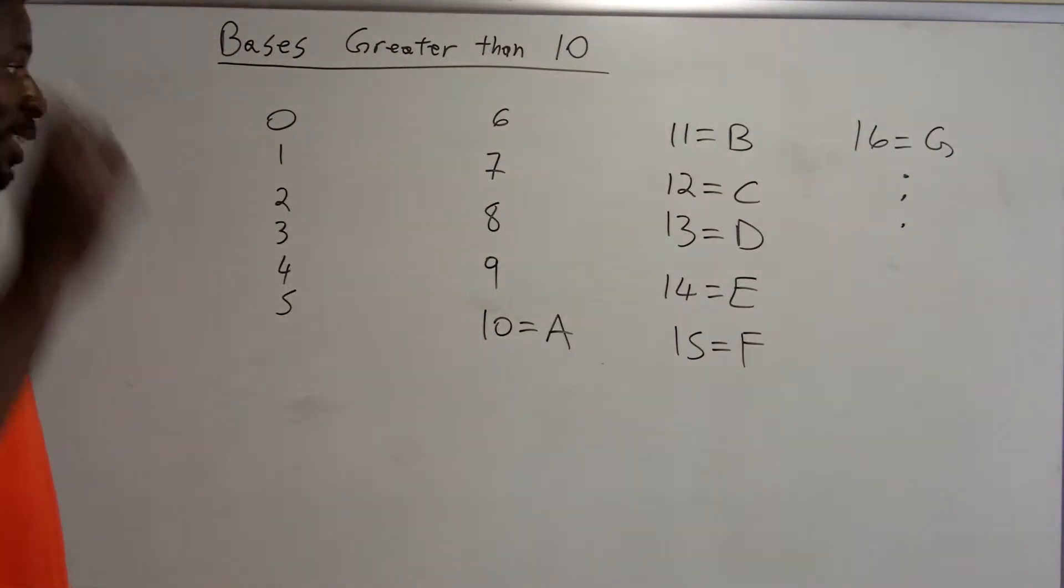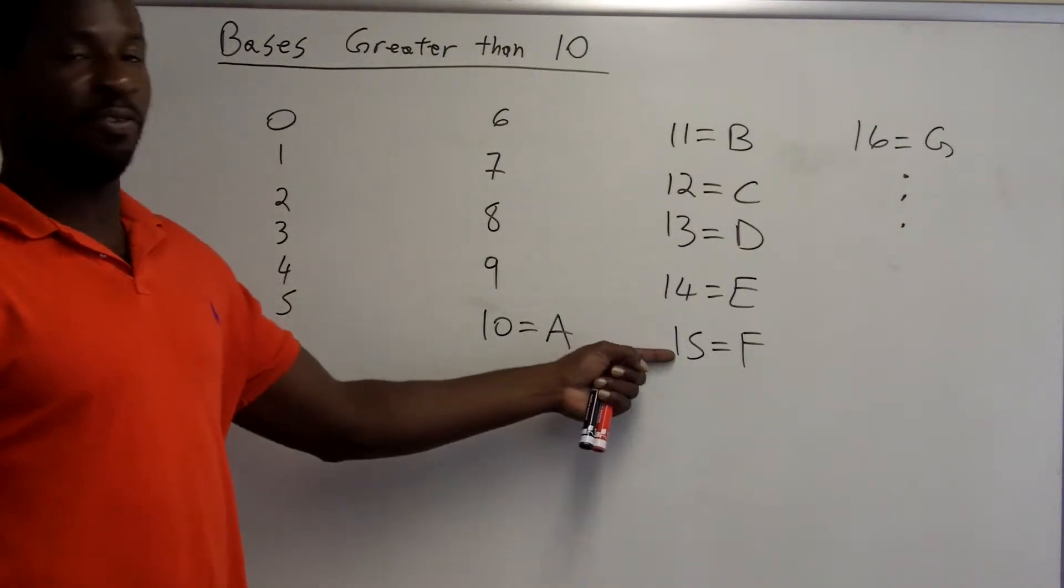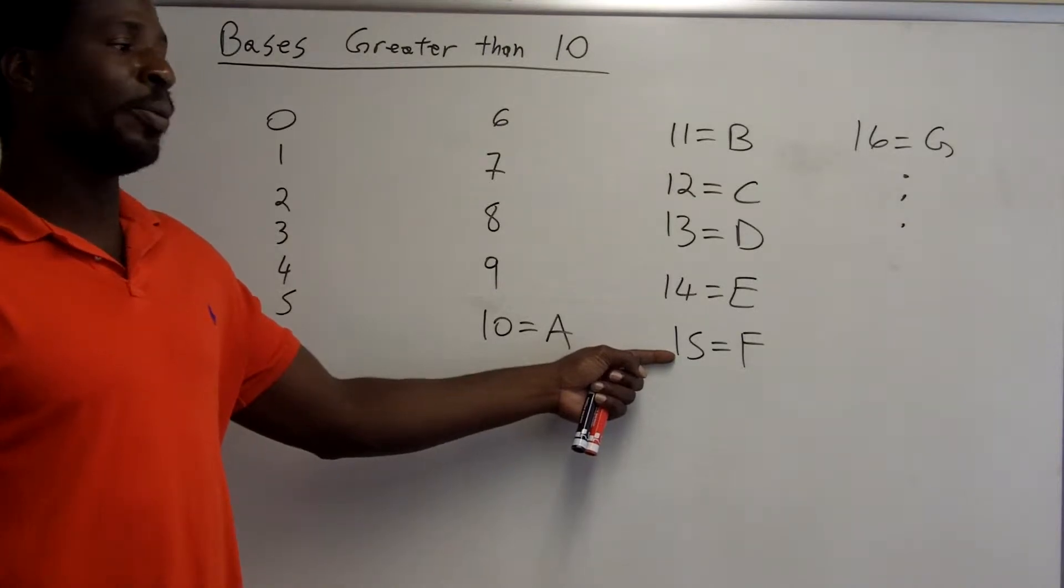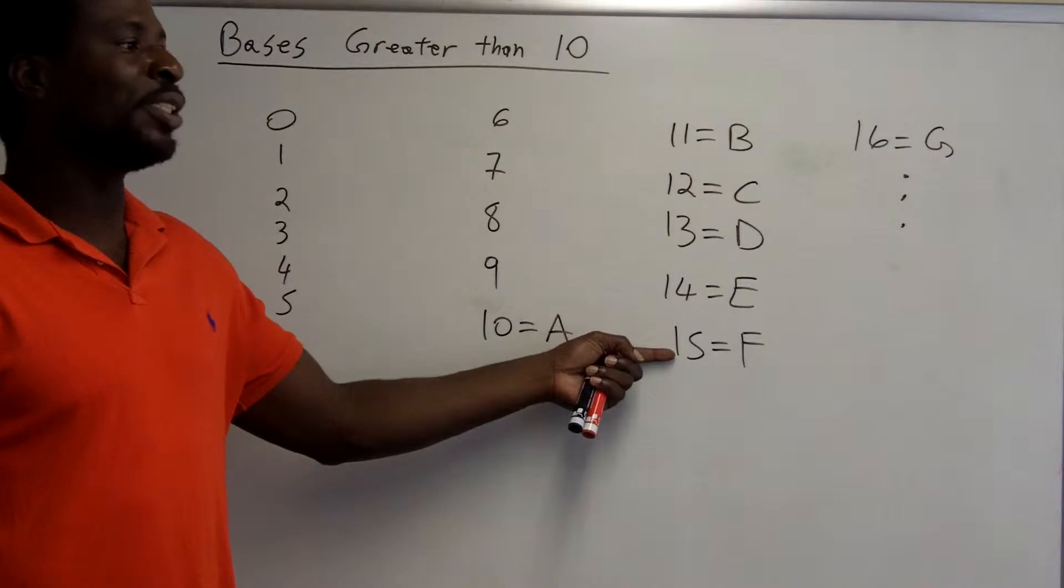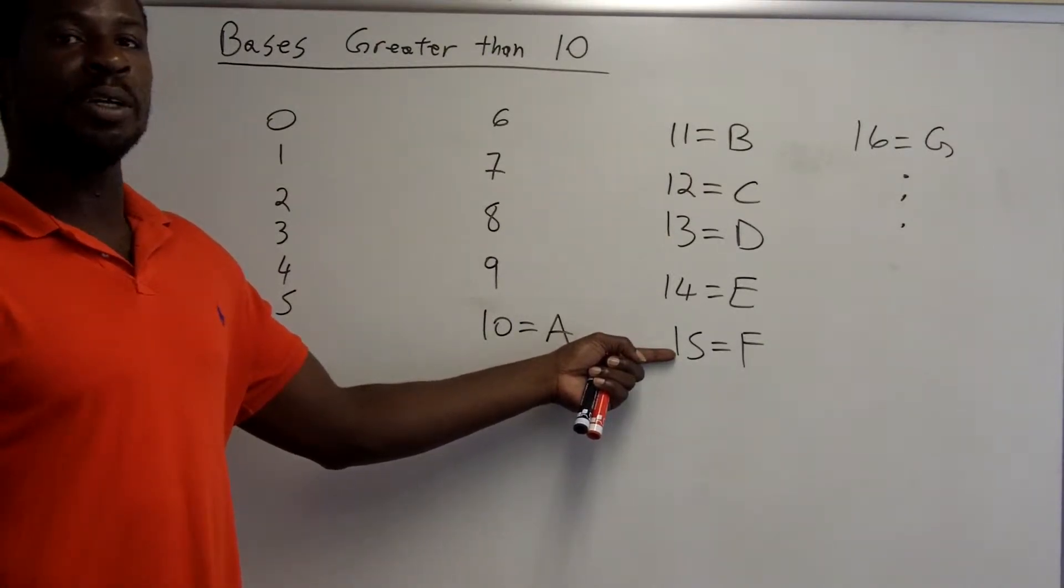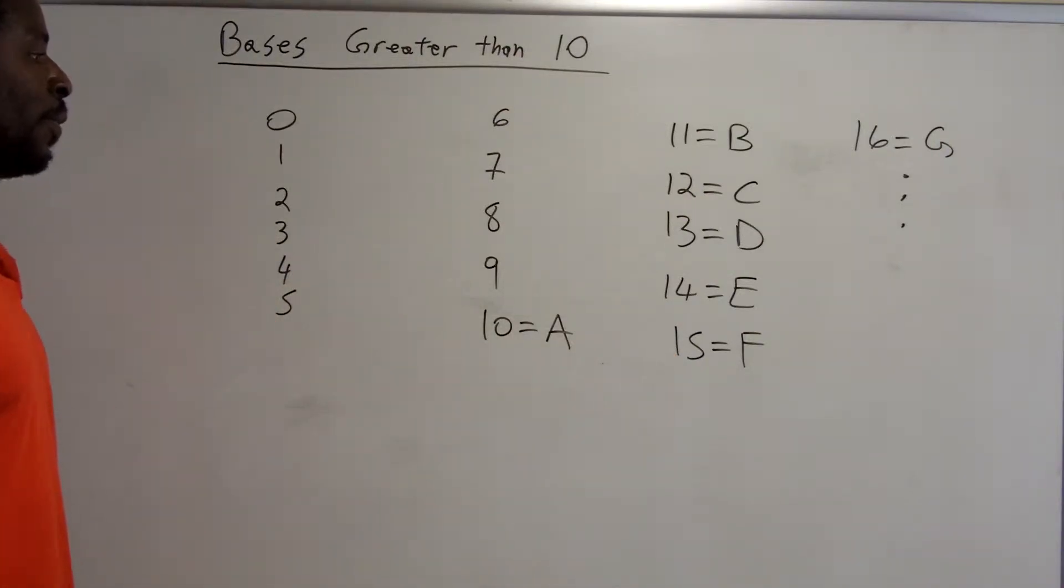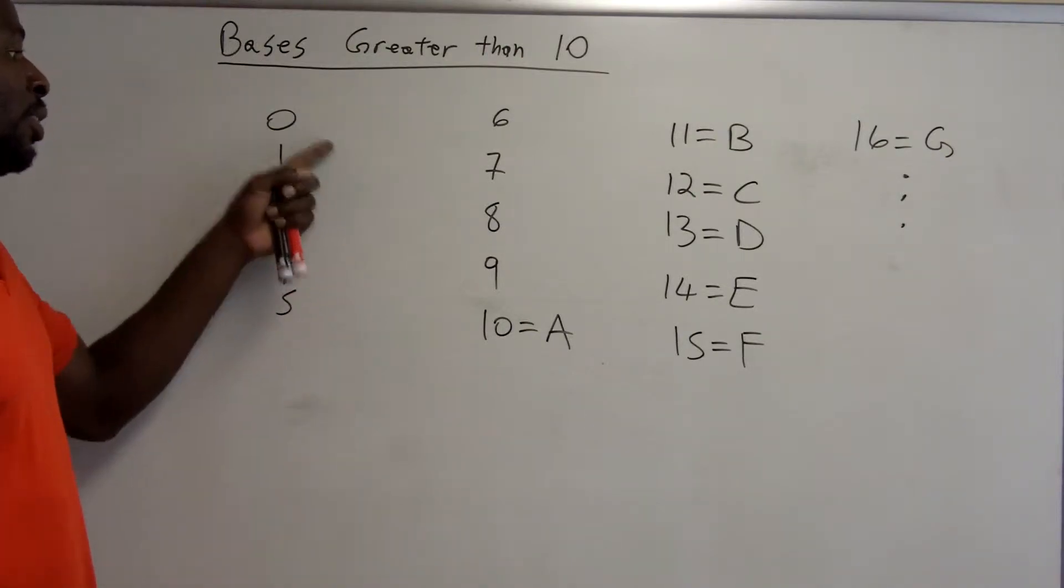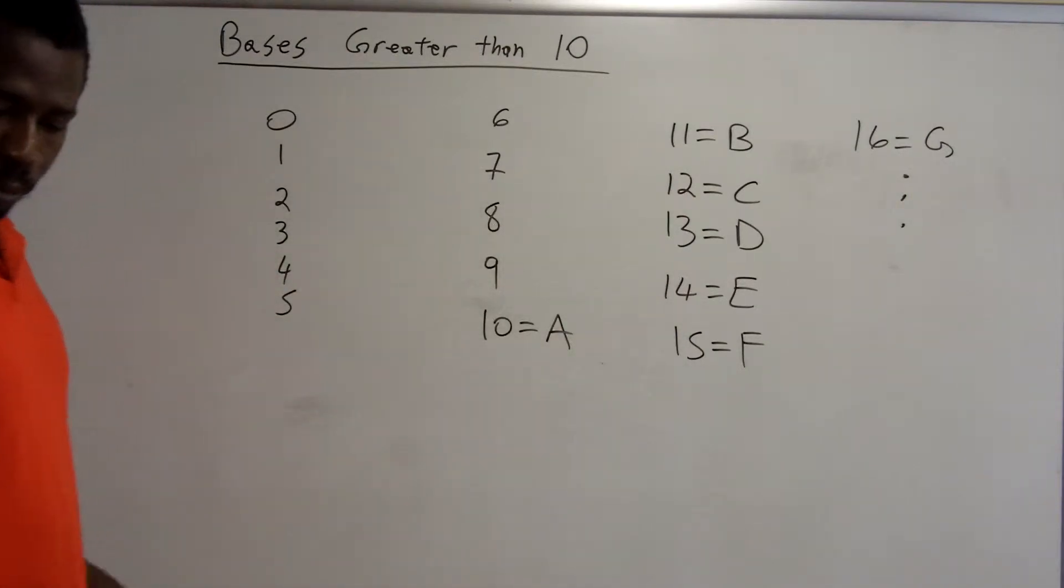So if you have a base 16 system, you'll be using the numbers 0 to 9 and the letters A through F to represent your numbers. Those will be the numerals to represent all of your numbers. A base 16 system is actually called a hexadecimal system. A base 2 system is called a binary system. Both of those are systems that your computer would use. Binary systems only use 0s and 1s. Hexadecimal systems use all the numbers from 0 to 9 and then A, B, C, D, E, and F.